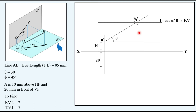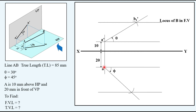Then take 20 mm below the XY line and locate the top view of endpoint A. Taking angle phi — which is 45 degrees in our question — draw a line at 45 degrees. Take 85 mm (the true length) in your compass, keep it on A, cut an arc, and obtain another horizontal line parallel to XY. This line is the locus of B in the top view, meaning the top view of endpoint B will be available on this line. This point is named B2, using 2 as the suffix — the reason will become clear as we proceed.